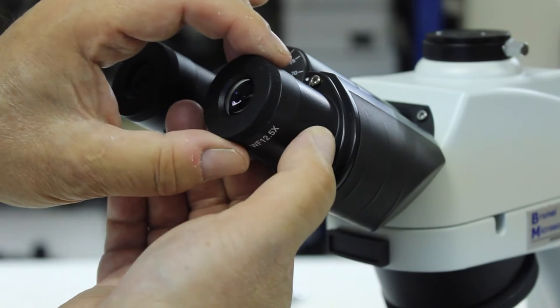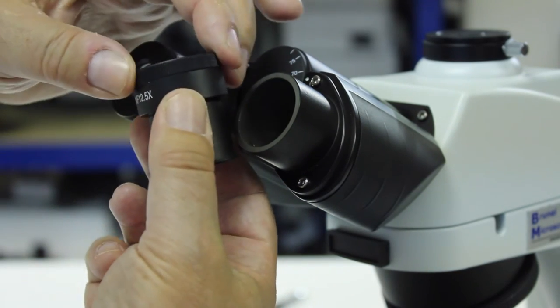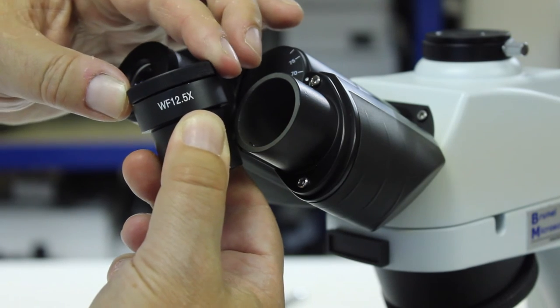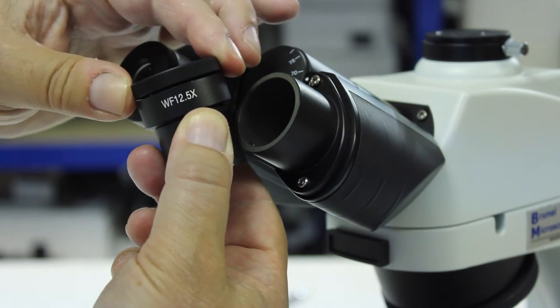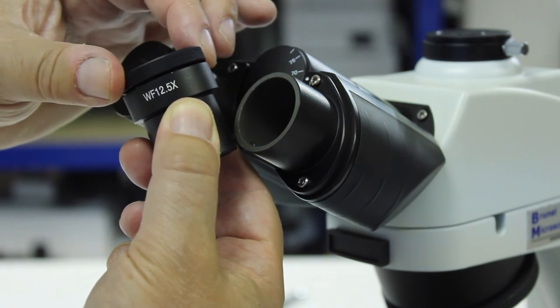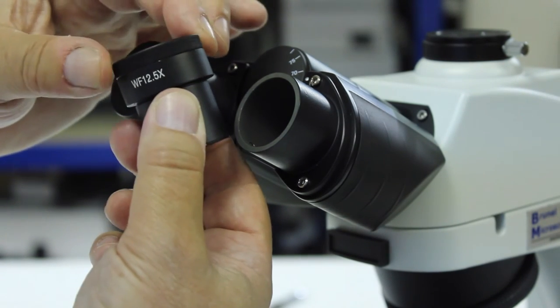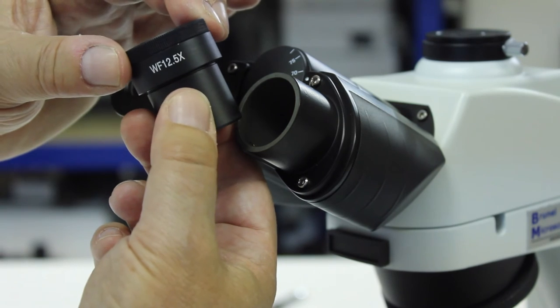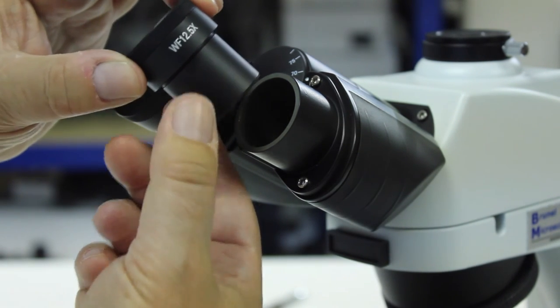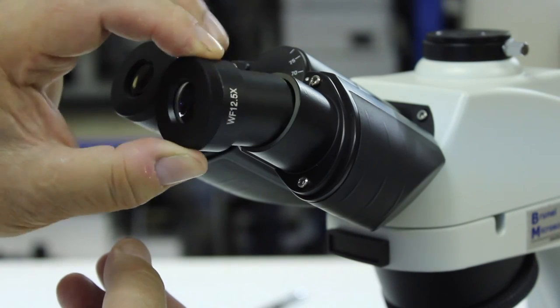These are times 12.5 eyepieces. The top lens will focus in and out, which focuses or defocuses the image that you see down the microscope. One of these eyepieces has the Wharton and Beckett Graticule in. It's a good idea to make sure that one is always in the right hand eye tube of the microscope.